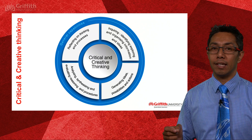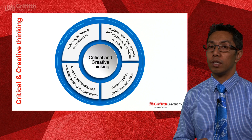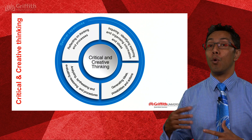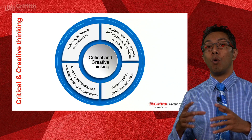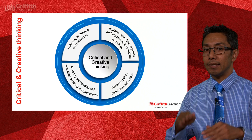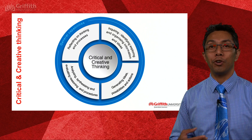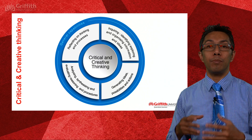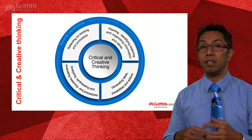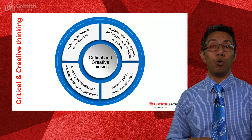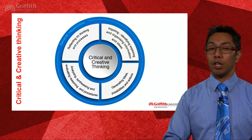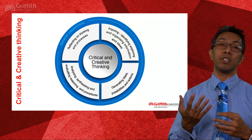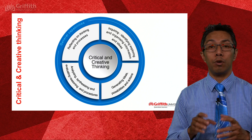Critical and creative thinking are really shorthand code for higher order thinking — referring back to Bloom's taxonomy. The critical element covers analysis and evaluation, while creative covers the creating level. We want students to be able to generate new solutions, analyse different elements and ideas, and evaluate those same ideas. In science we develop this through students creating hypotheses and coming up with their own methods — there's a whole range of ways we are critical and creative within the sciences.